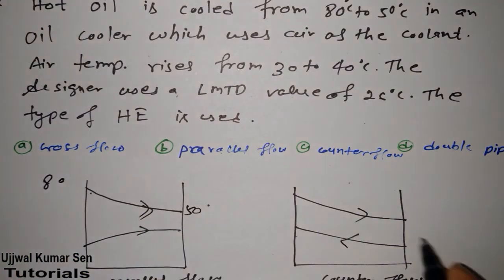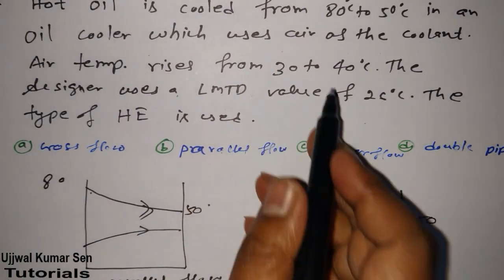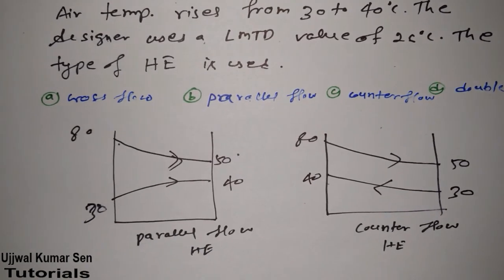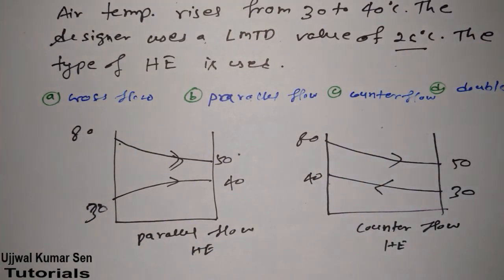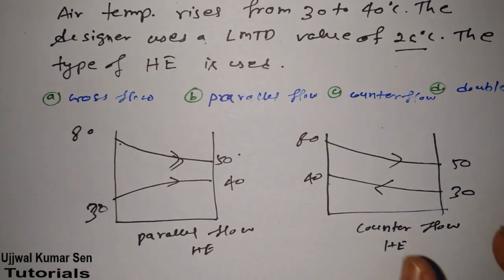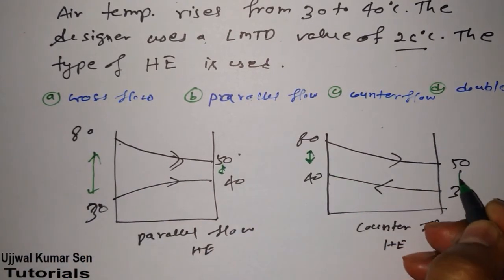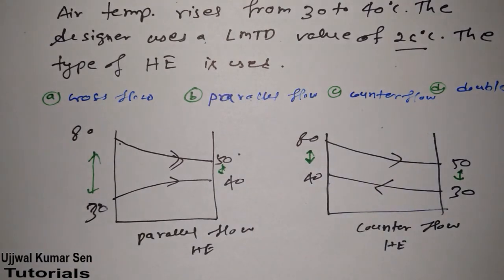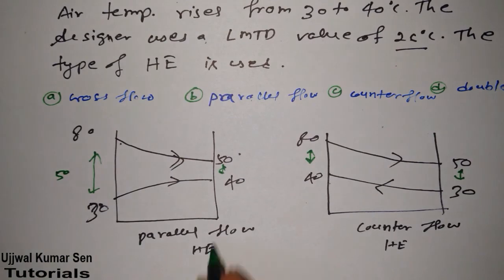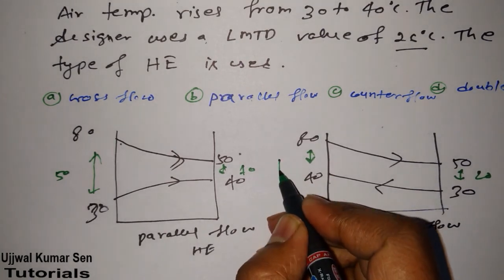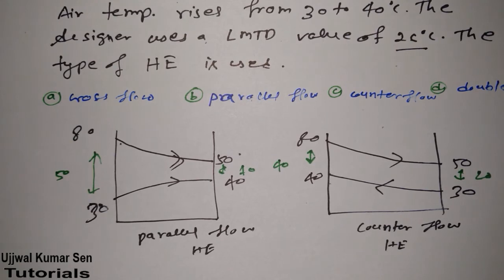For the parallel flow heat exchanger, the hot well cools from 80 to 50 and the air goes from 30 to 40. So we find theta 1 and theta 2: theta 1 is the difference at one end — 80 minus 30 equals 50 — and theta 2 is the difference at the other end — 50 minus 40 equals 10. For counter flow, the differences work out to theta 1 equals 40 and theta 2 equals 20.